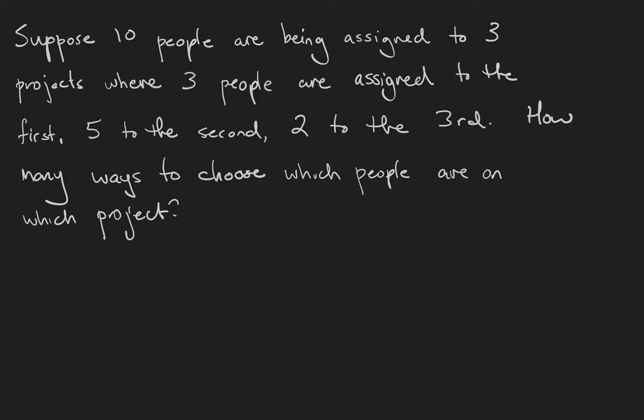The first thing to notice is that there is a multiset at play. In deciding how many people go in each project, we have chosen the multiset {1} three times, {2} five times, and {3} twice.